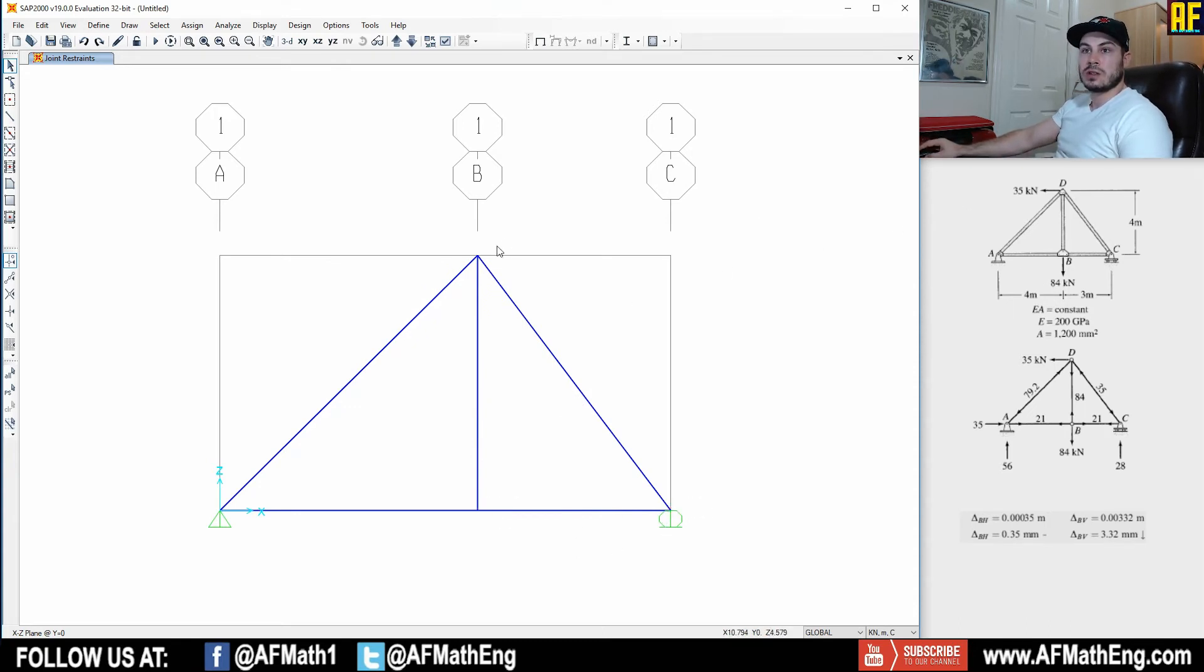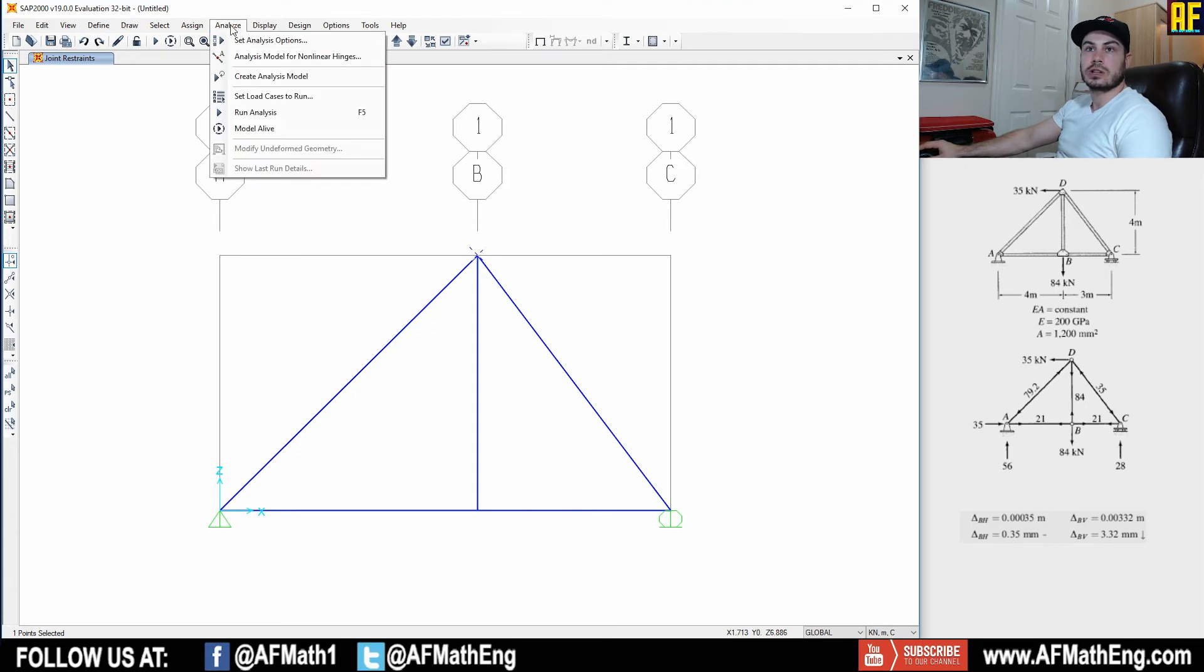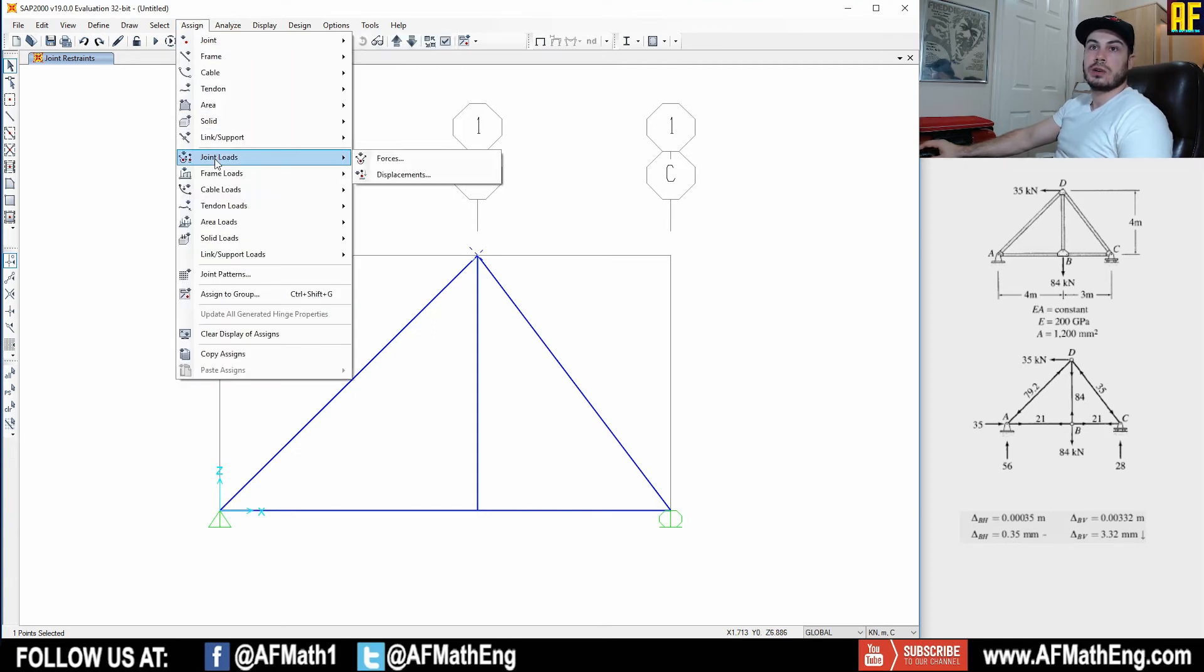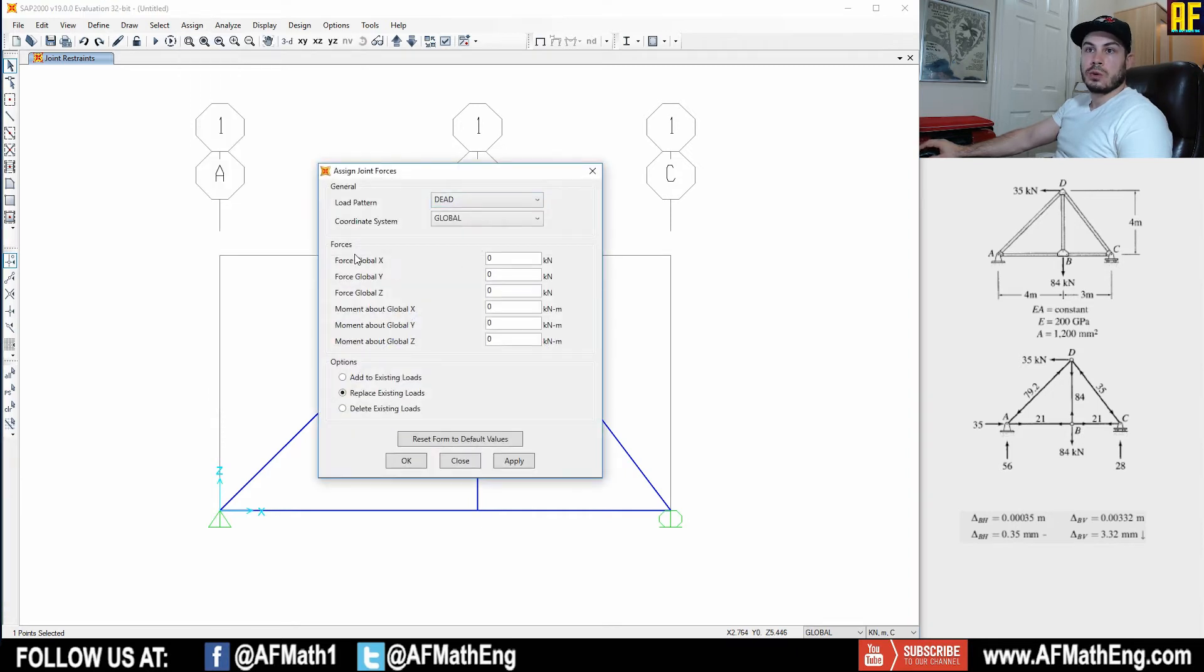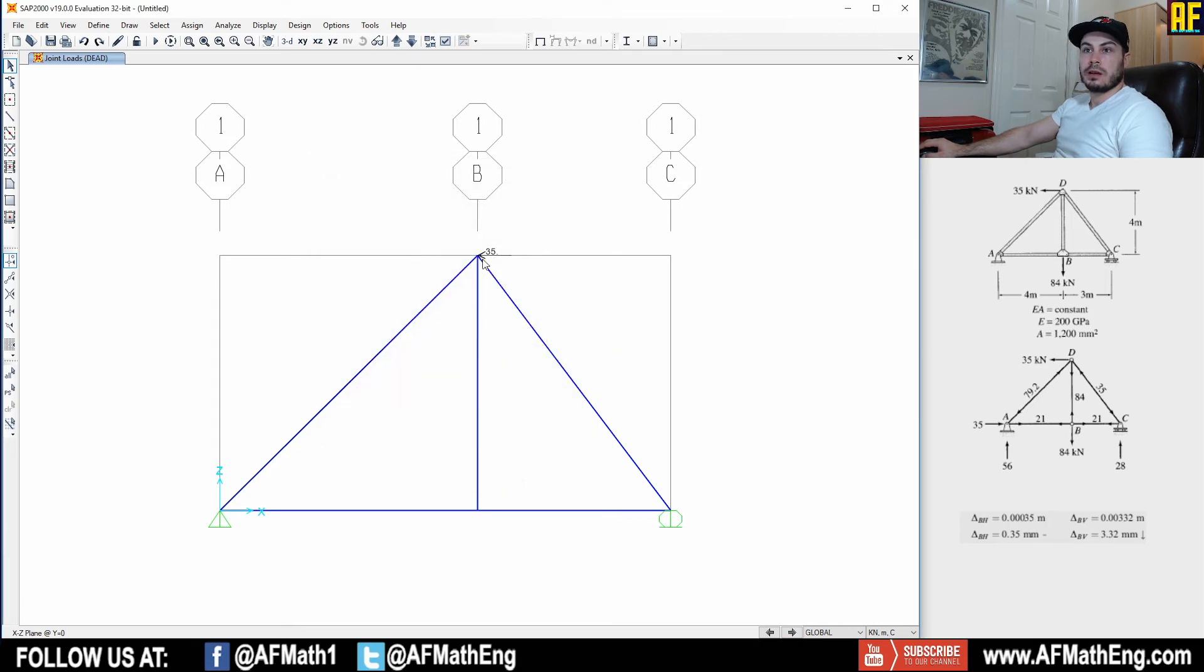Let's go ahead and assign these loads now, these point loads. So as you can see, we have a 35 kilonewton point load at D. It's going in the negative X direction. So we're going to go to assign and we're going to go to joint loads and forces. And we're going to go to the global X. And we would like to assign a negative 35 kilonewton force. It doesn't matter what option you have because there's no other forces at that point. So as you can see, we have a 35 kilonewton point load there.